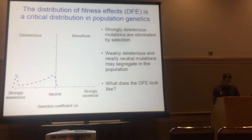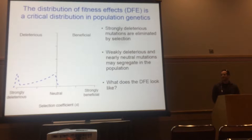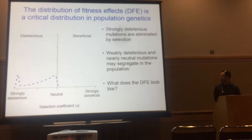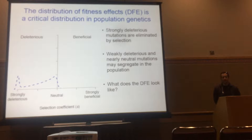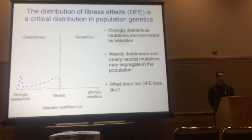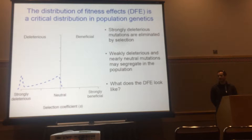Good morning everybody. The distribution of fitness effects refers to the proportion of mutations that have a particular effect on fitness. One hypothetical distribution shows many strongly deleterious mutations, many neutral mutations, and few in the middle. The distribution of fitness effects is a key quantity in population genetics because it determines how evolution works and what happens to genetic variants once they arise. There's been a lot of interest in characterizing this distribution across different species.